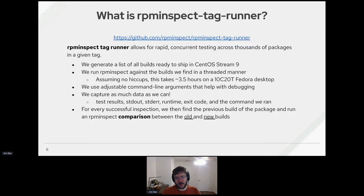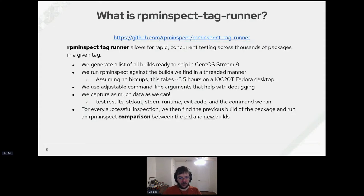One of the things Tag Runner does is standardize the commands we're running. We don't care as much about informational output — we want to know what RPM Inspect is seeing as either broken or not. We're trying to maximize the signal-to-noise ratio. We're also trying to capture as much data as possible: not just the exit code (0 for pass, 1 for fail), but also standard output, standard error in case something breaks, the runtime, the exact command run, and of course the test results.